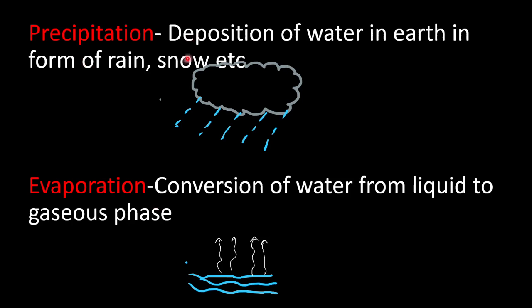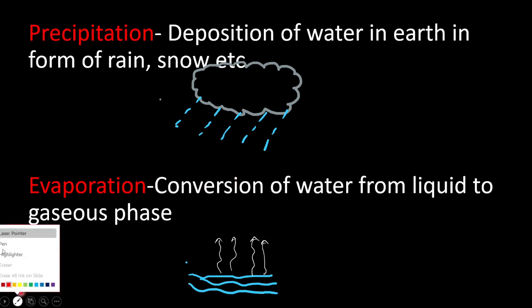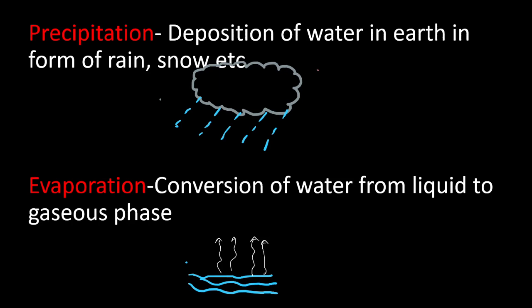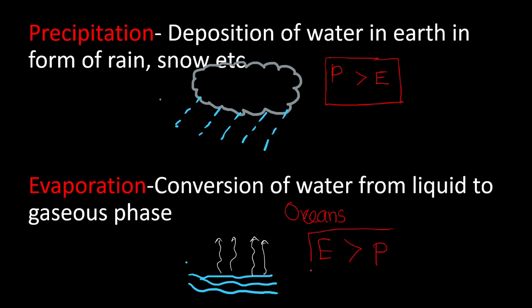Precipitation is the deposition of water in the form of rain, snow, etc. Evaporation is the conversion of water from liquid to the gaseous phase. An important point: over land mass, the precipitation rate will be greater than the evaporation rate, whereas over the oceans, the evaporation rate will be greater than the precipitation rate.